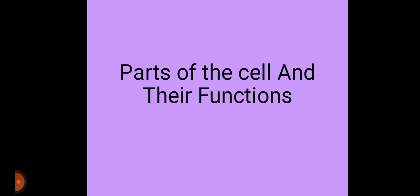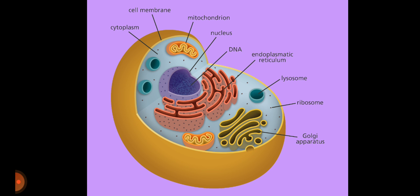Parts of the cell and their function. Cell has nine parts and they are cytoplasm, cell membrane, mitochondrion, nucleus, DNA, endoplasmic reticulum, lysosome, ribosome, and Golgi apparatus.